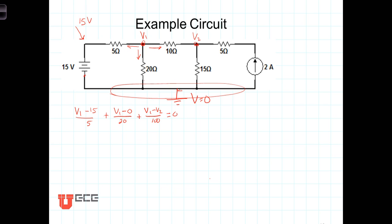Writing a node equation at the second node: the current leaving that node going to the left is V2 minus V1 divided by 10 ohms. Note that this term for the current leaving node 2 going to the left equals the current leaving node 1 going to the right through that same resistor, with the exception that there is a sign difference.